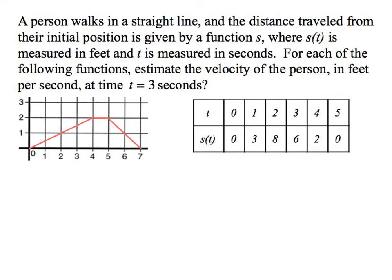And if we think back to how we do this, isn't that just going to be rise over run? 1 up, 2 over. So the slope right there is going to be 1 over 2, which is equal to 0.5 feet per second. That would be the estimate velocity of this person at time 3.